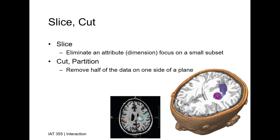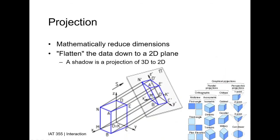Cut, or partition, means removing a large fraction of the data on one side of a plane. The important concept is that there is a plane, and you decide to keep everything on one side of it. Think of a cut plane at the forehead — everything above is not shown, everything below is shown. It is essentially a filter: keep everything greater than some threshold, discard everything less than it, or vice versa.